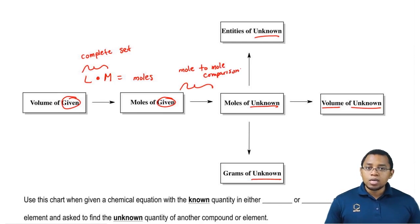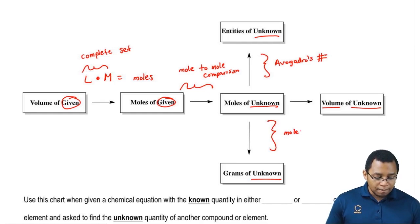And if you know moles of unknown, you can find entities of unknown by using Avogadro's number. And you can go to grams of unknown if you know the molecular mass of the compound.